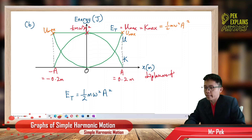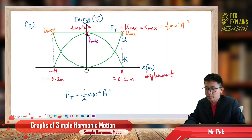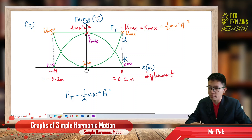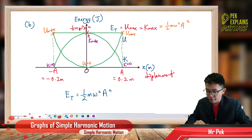K is maximum at the equilibrium position, and K is zero at the amplitude. The potential energy is zero at equilibrium. We need to find and label the maximum value ½mω²A² on the graph — without this label we will lose marks. So we need to calculate the total energy.